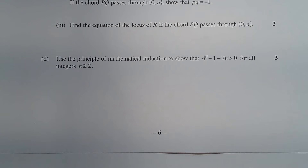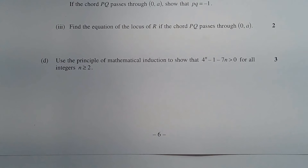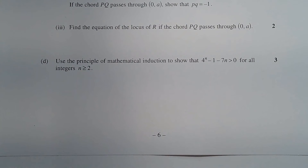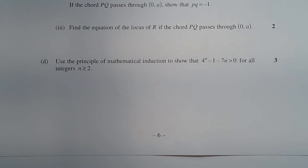Question 4D. Use the principle of mathematical induction to show that 4 to the power of n minus 1 minus 7n is greater than 0 for all integers n greater than or equal to 2.